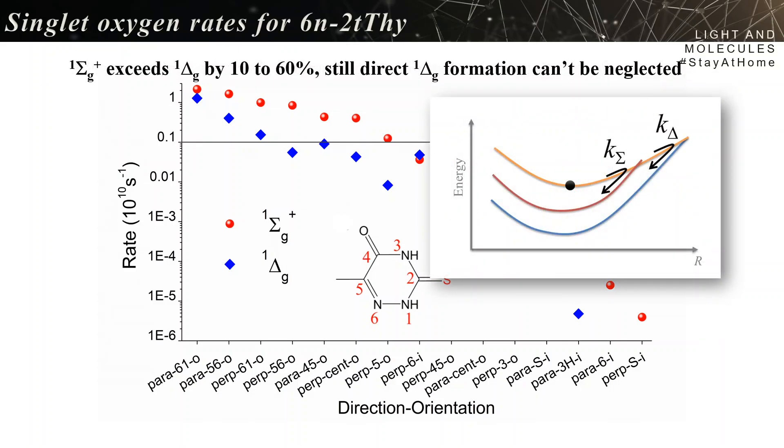You may form singlet oxygen in the sigma state or in the delta state. And the sigma formation exceeds the delta formation by 10 to 60 percent, depending on the direction. But still, a direct formation of the delta can't be neglected.